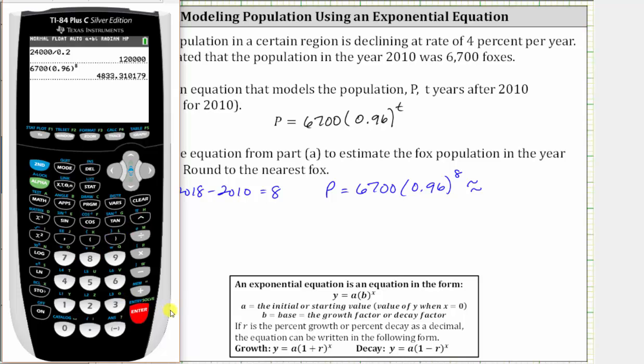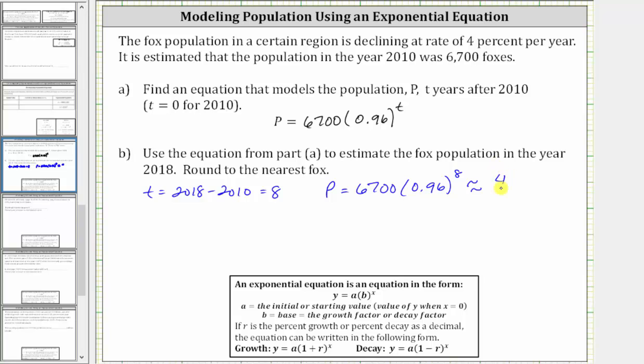We get a result with a 3 in the tenths place, so we round down to 4,833. The fox population is estimated to be 4,833 in 2018.